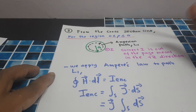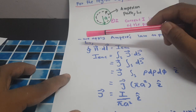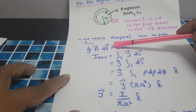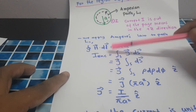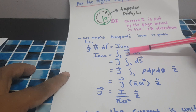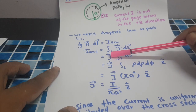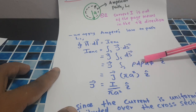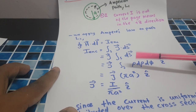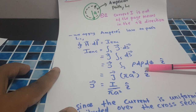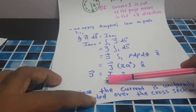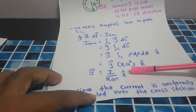We apply Ampere's Law to path L1. The closed line integral of H·dL equals I enclosed. So I enclosed equals the surface integral of J·dS. We know that J is constant and dS is ρ dρ dφ in the z-direction. So the total area is πA², and J equals I / (πA²) in the z-direction.